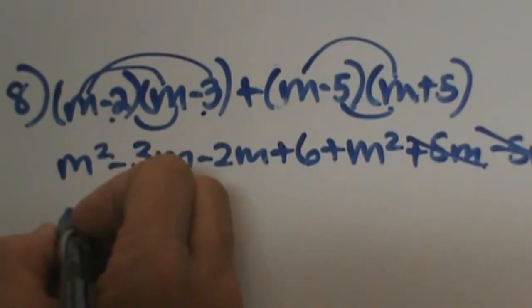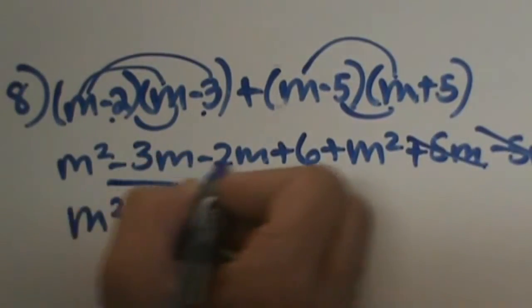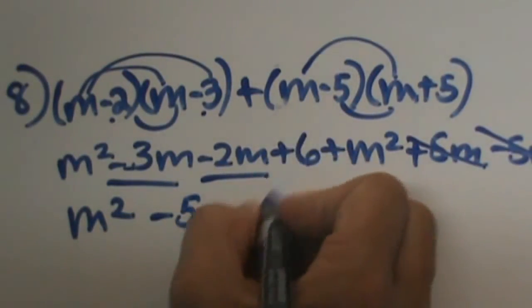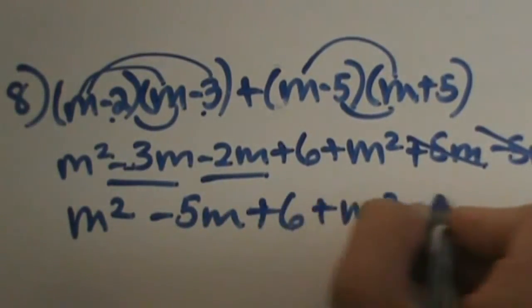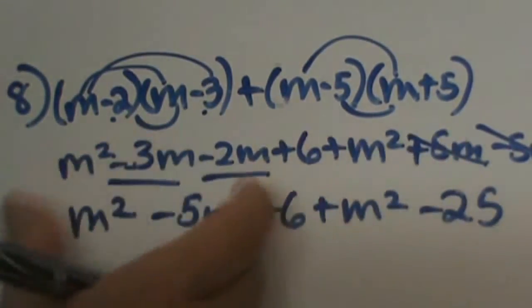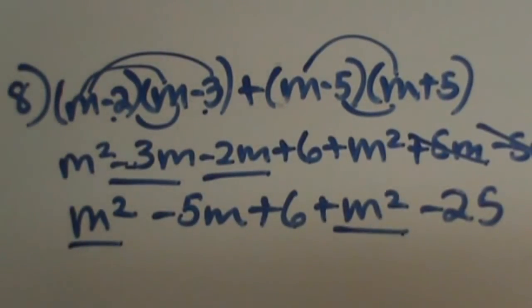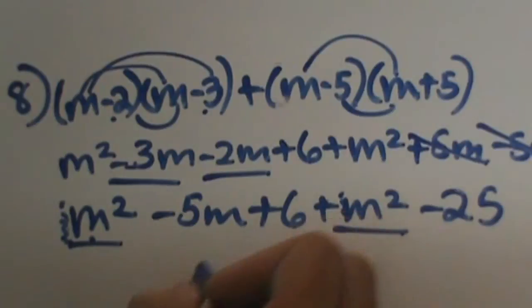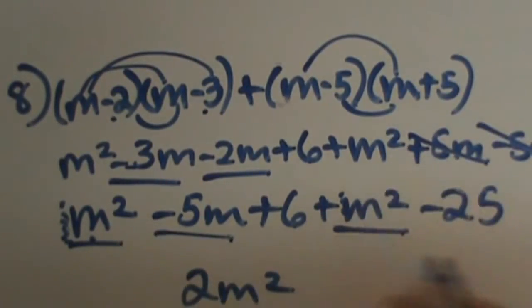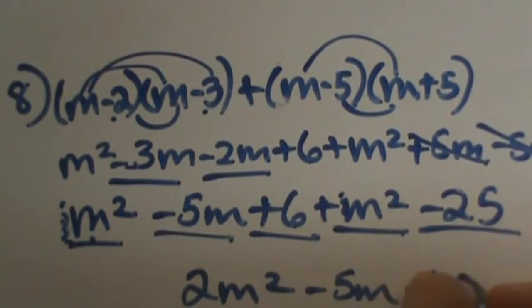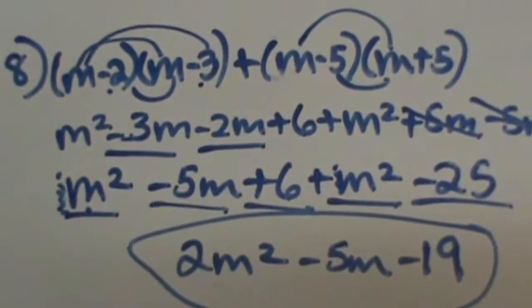So let's bring down what we have left. On the left we have m squared, and then negative 3m and negative 2m gives negative 5m — same sign, you add — and then bring the 6 down. From the second group all we have is m squared and minus 25, because the middle terms cancelled. Now adding like terms: m squared plus m squared is 2m squared. Negative 5m stays since there is no middle term from the second group. Positive 6 and negative 25 gives negative 19. So the answer is 2m squared minus 5m minus 19. That is how you would simplify those.